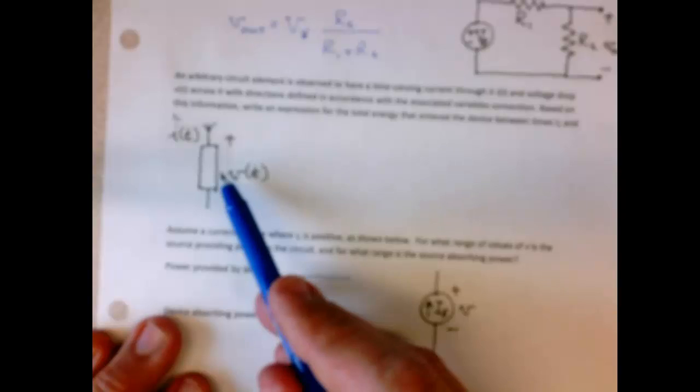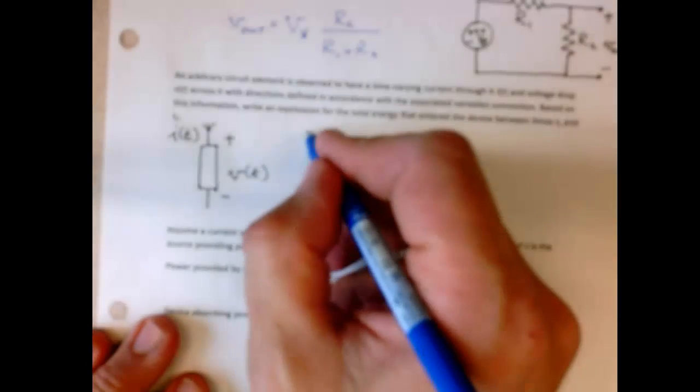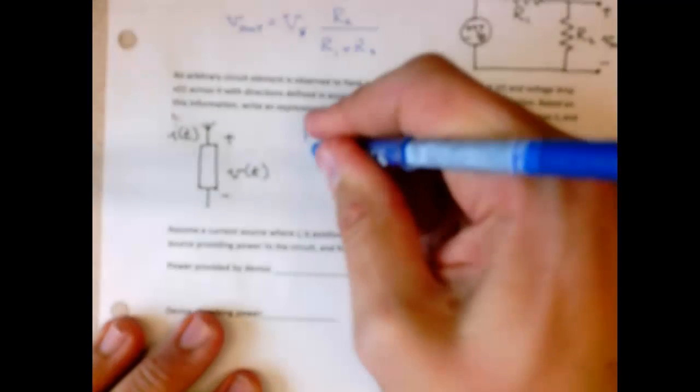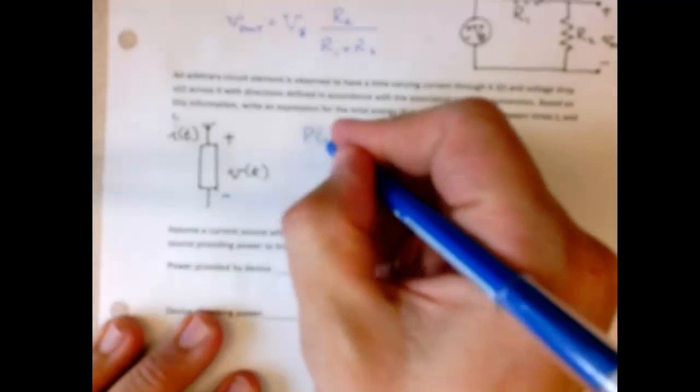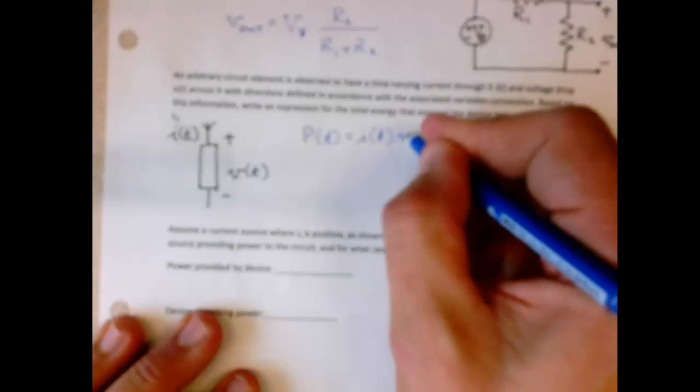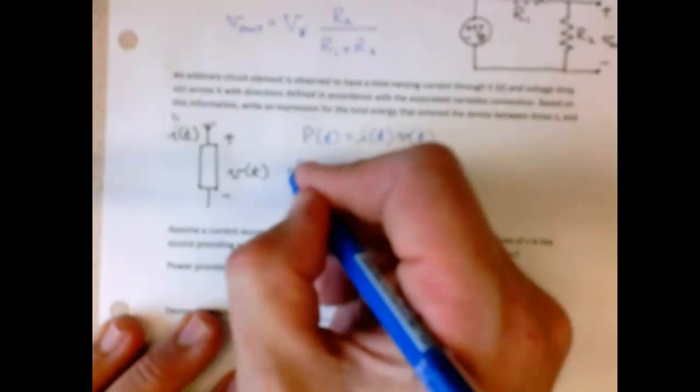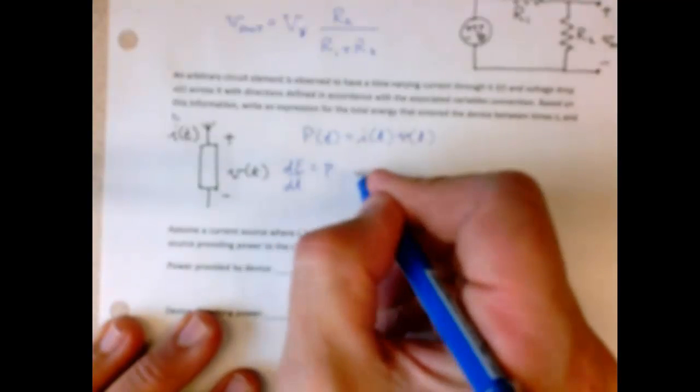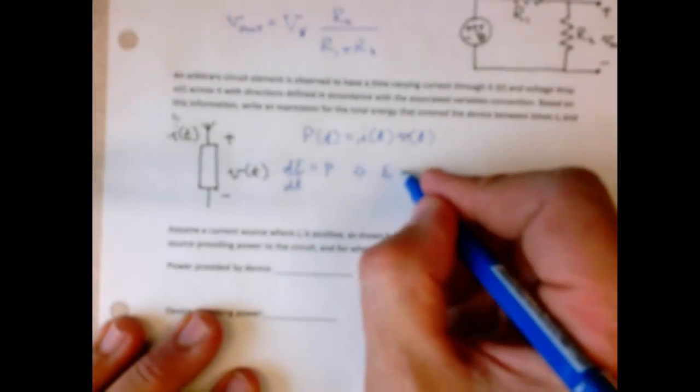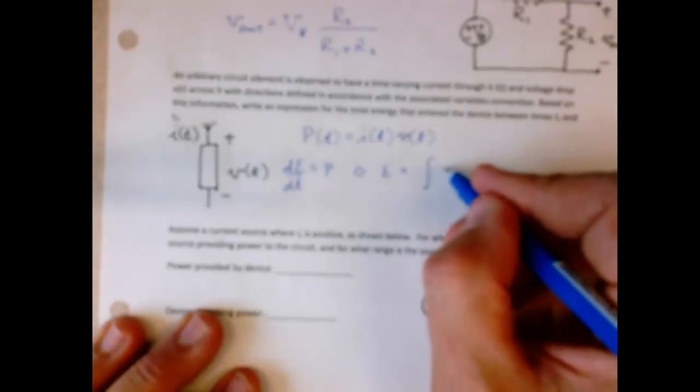Alright, then the last two problems are, if you're looking at a circuit element with I of T and V of T, we know that the power, the instantaneous power I should say, which is a function of time, let me write that in explicitly so we don't lose track of what's going on, is equal to I of T times V of T. Now, we know that the energy, the rate of change of energy is the power, so we can use the fundamental theorem of calculus, and we can just note that the energy is going to equal to the integral of the power.